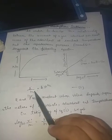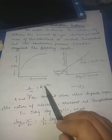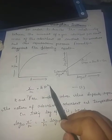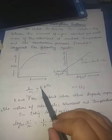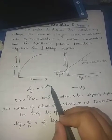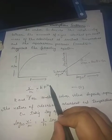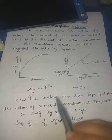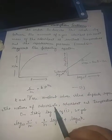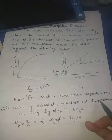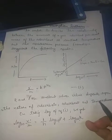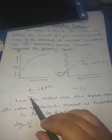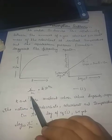In the equation X/M = K·P^(1/N), K and N are two constants, and the values of these two are dependent upon the nature of the adsorbate, adsorbent, and temperature. This is a demerit, because if these two are dependent upon temperature, how can they be considered constants?